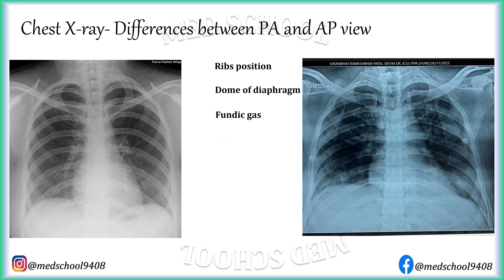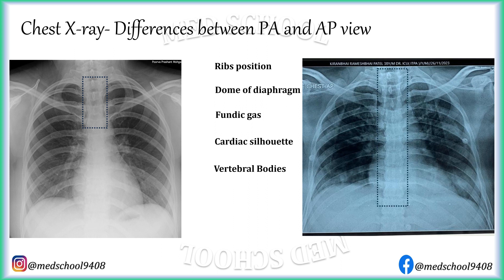In PA view, the heart is closer to the film and the tube is 6 feet away, so the cardiac silhouette is approximately the same size as the heart with sharp borders. In AP view, the heart is not closer to the film and the tube is only 4 feet away, resulting in apparent cardiomegaly with blurred borders. In PA view, the vertebrae are not closer to the film, so only the upper four thoracic vertebrae are clearly visible, while in AP view all vertebrae are clearly visible.